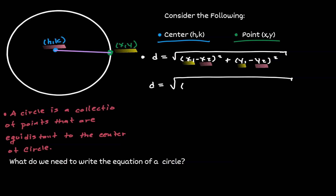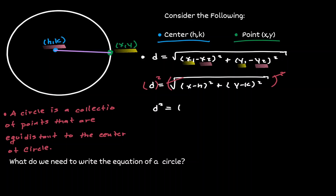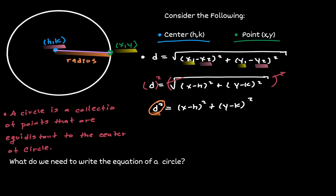So now let's plug that information into the distance formula. We're going to have (x minus h) squared plus (y minus k) squared. Now let's get rid of the square root by squaring both sides, giving us d squared equals (x minus h) squared plus (y minus k) squared. The variable d represents the distance between the two points — that is, the distance between the center and a point on the circle — which is the radius. So let's replace d with r to indicate this is the radius of the circle.